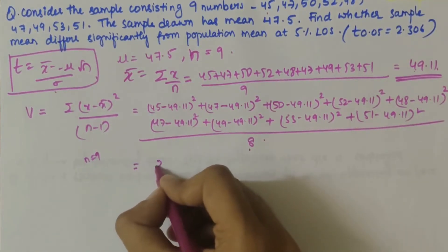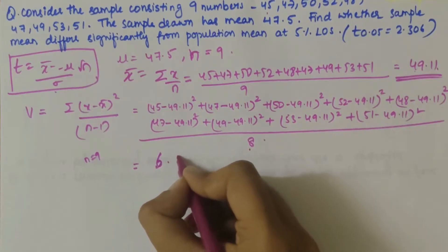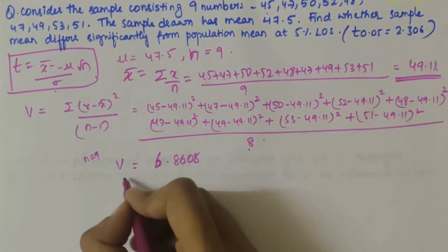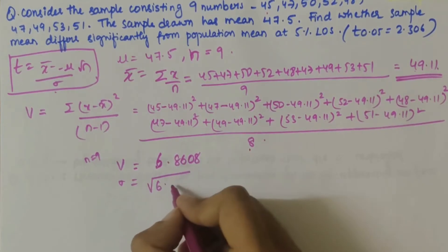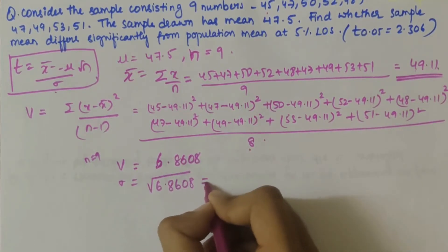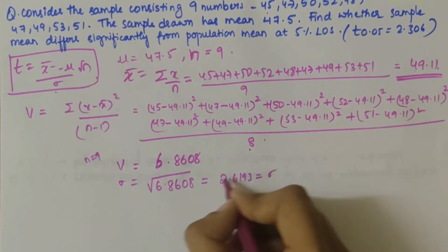If you solve this, you will get it as 6.8608. V value is 6.8608. Standard deviation would be the square root of 6.8608, that is 2.6193, which is sigma.